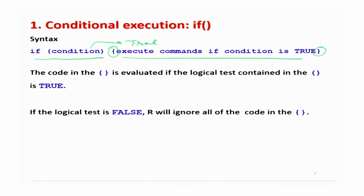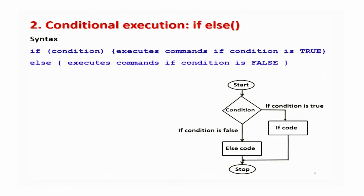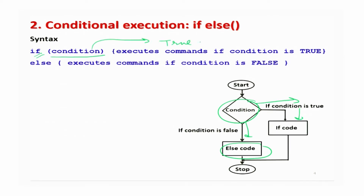If false, the program stops and there is no outcome. After that we considered if-else: if the condition is true, some code is executed; if false, some other code is evaluated. The syntax is: write if, then the condition in parentheses, the true-branch inside curly brackets, then else with the false-branch inside curly brackets. That is how the if-else condition works.